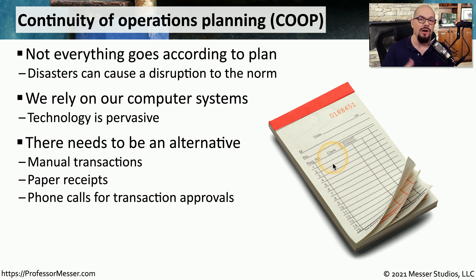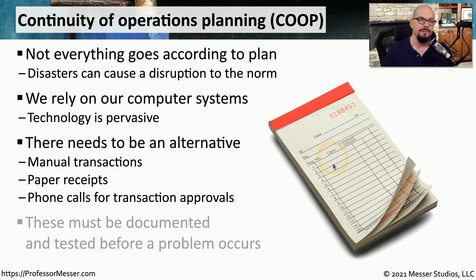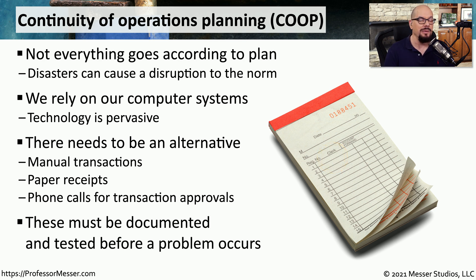Instead of using automated transaction approvals, you would pick up the phone and call someone to get those approvals. If we have to use these processes, it will probably be painful and less efficient than our technology, but at least we'd be able to get some work done. We want to be sure that all of these contingencies are well-documented prior to a security event occurring.